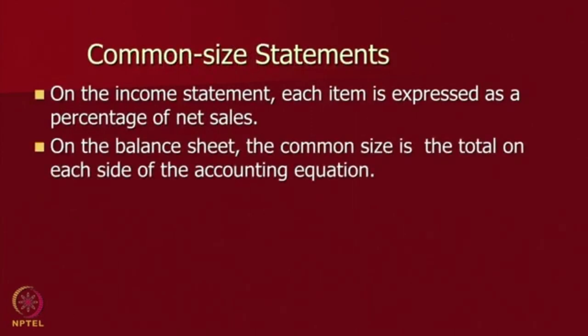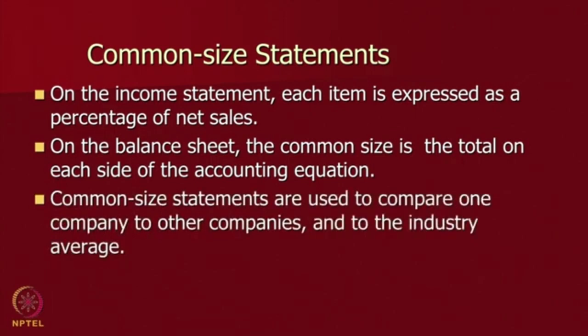In a common size income statement, each item is expressed as a percentage of net sales or total revenue. For the balance sheet, we take the total of the balance sheet. Common size statements are very useful not only for comparison of items within the same company over the last year, but also across the industry. For example, a small cement company and a large cement company will have different absolute figures, so you cannot compare them in absolute terms. But by converting them as a percentage of sales, comparison across different companies becomes possible. This is called vertical analysis.